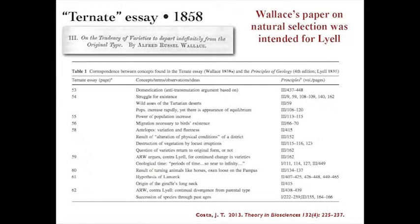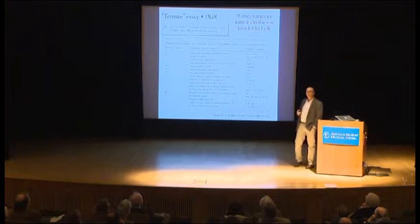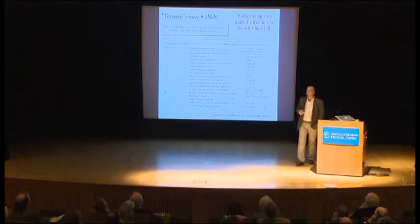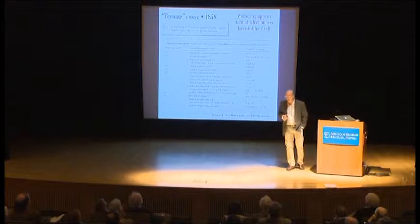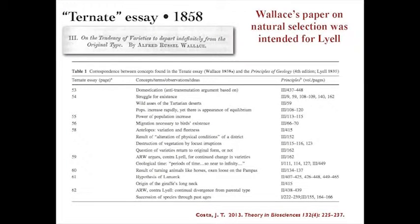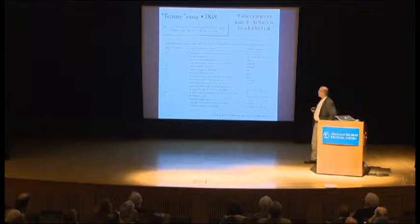In the Ternate essay — 1855 was consilience, 1858 is natural selection — Wallace's approach was really to write this paper with reference to Lyell, which is why when he sent it to Darwin, he asked Darwin if he thought it sufficiently important to please show it to Lyell. If you map out the paper almost page by page, you can find not only ideas but sometimes exact examples and phrases that come directly from the Principles of Geology. Lyell was squarely in Wallace's mind when he wrote the Ternate essay announcing his discovery of natural selection.